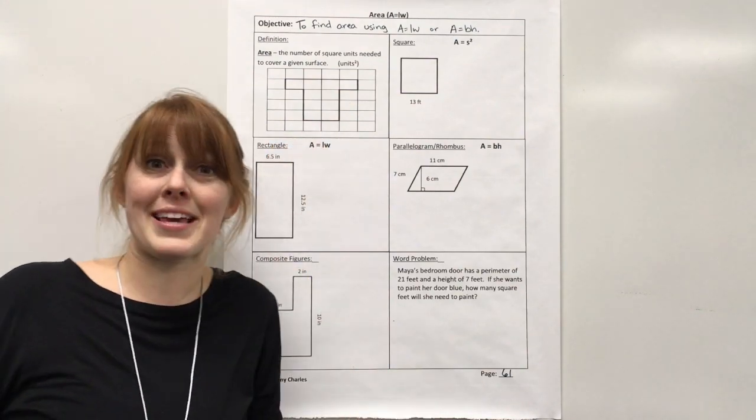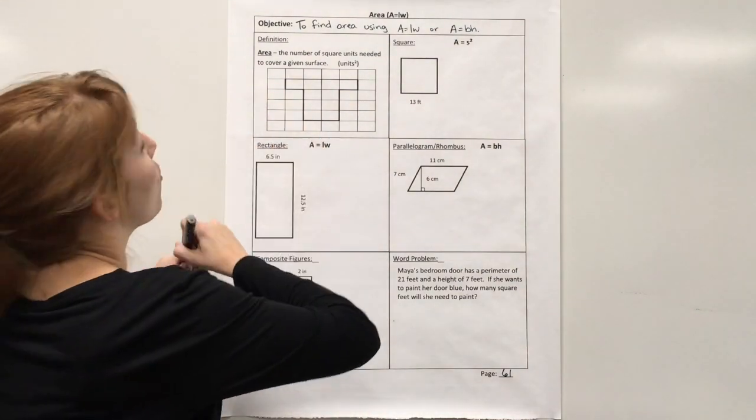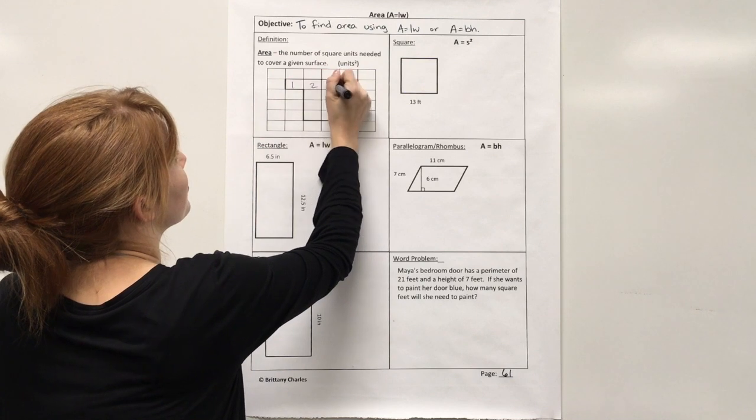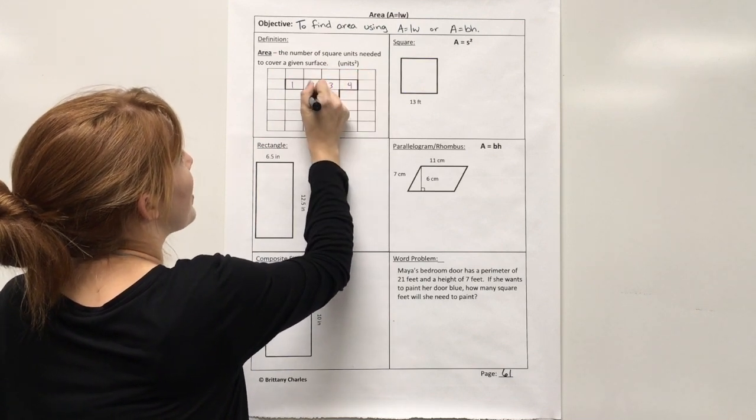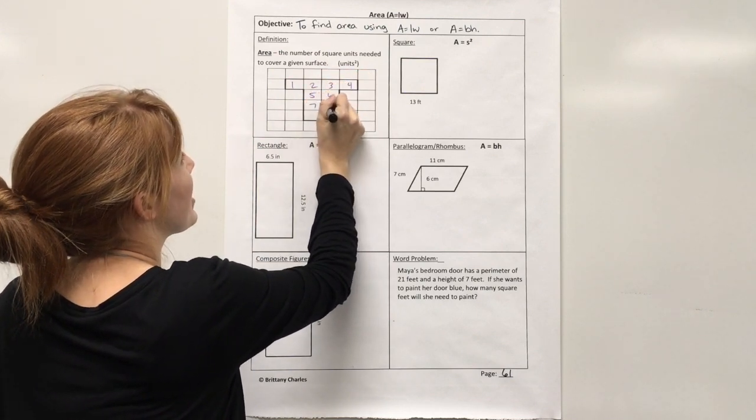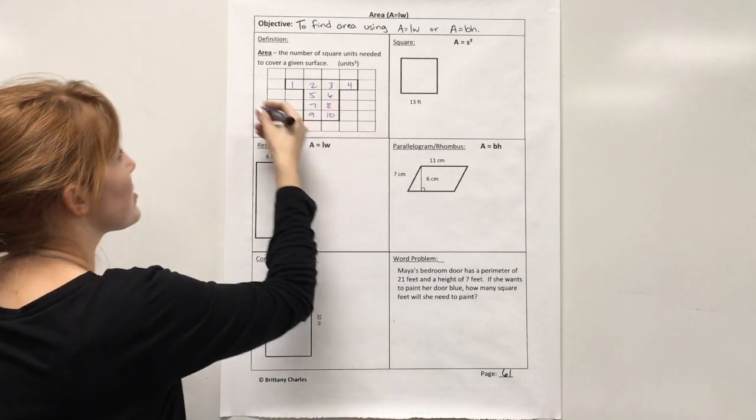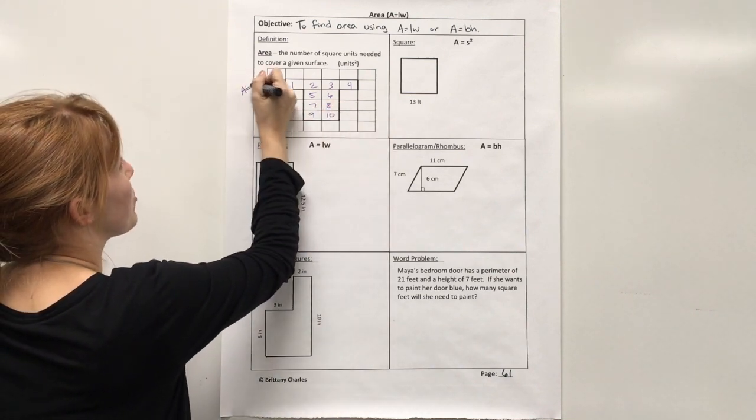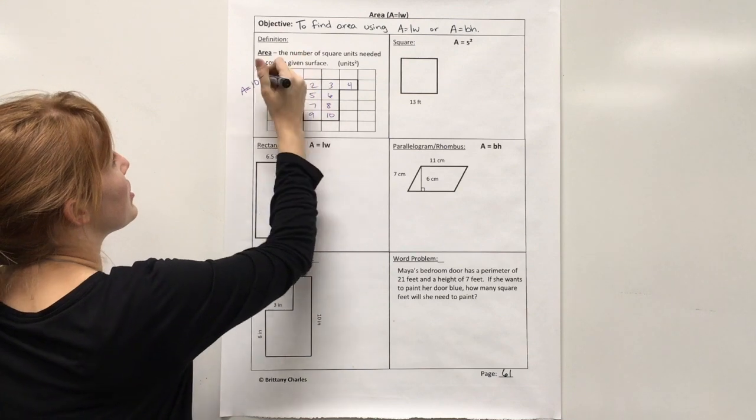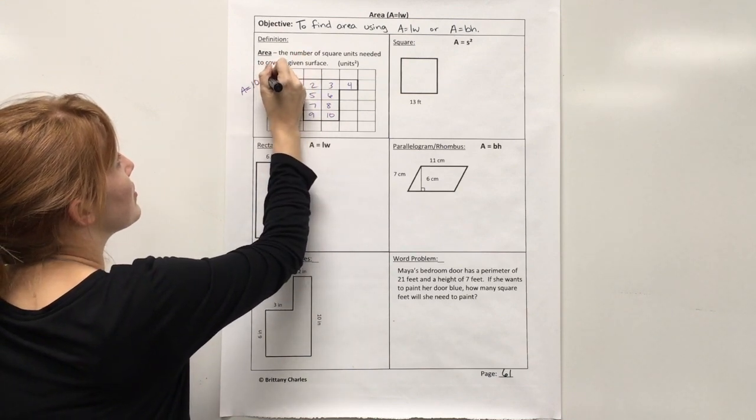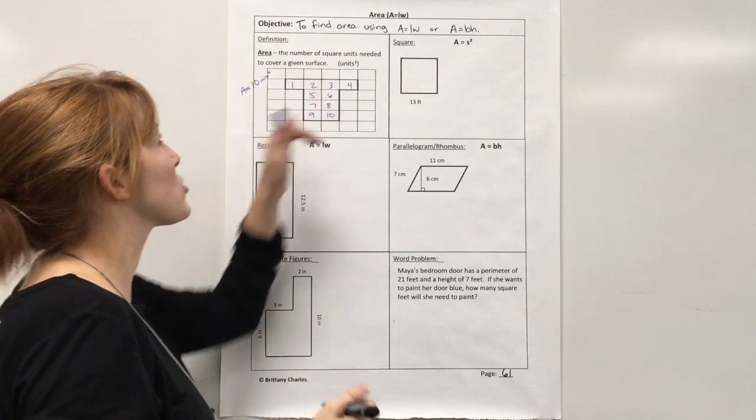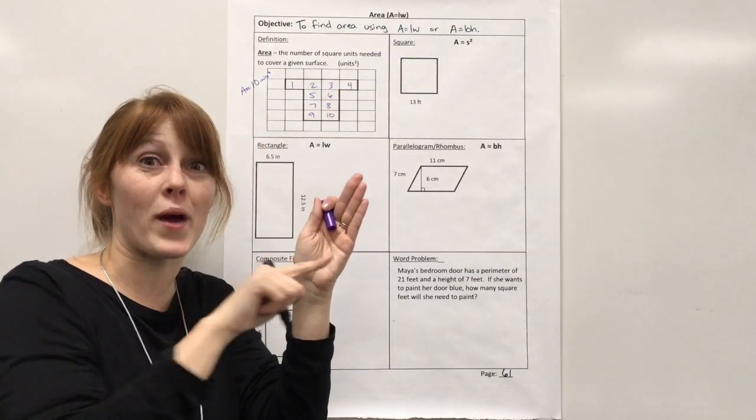If I want the area, I want to know how many square units it takes to cover that T. So in this case, all I would need to do is count. So I have 1, 2, 3, 4, 5, 6, 7, 8, 9, 10. So in this figure, my area equals 10 units squared. And it's squared because they're square units.